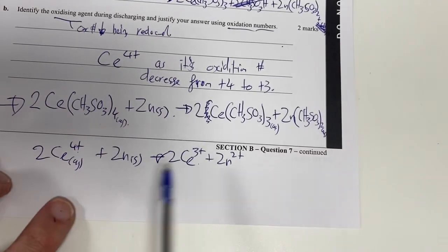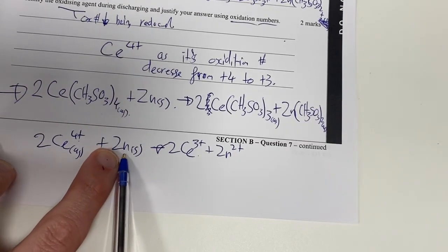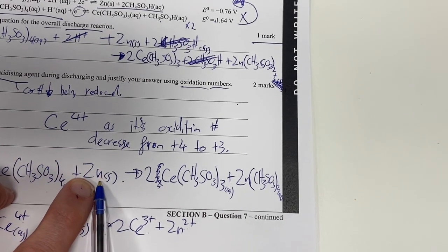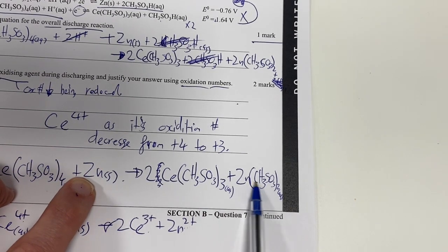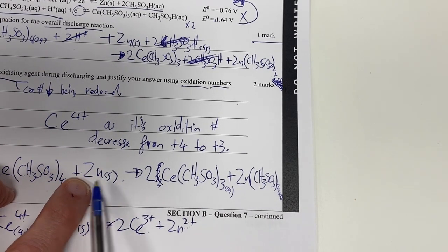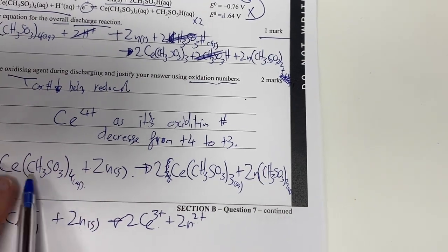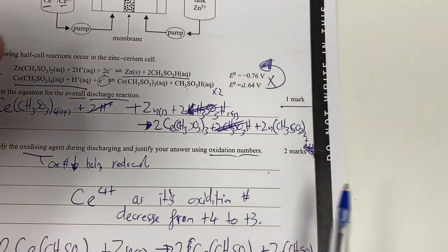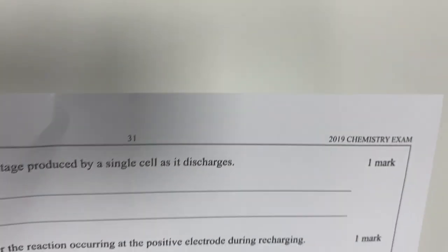The other way of looking at it is the fact that the zinc here starts off at 0 and it's definitely going up to 2 positive. We can see it here, it's 0 here in my reaction. It's becoming an ion which means it's going to become oxidized. So therefore this has to be my oxidizing agent and we can also justify it in that way. That's the answer to those two questions.